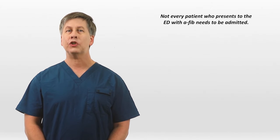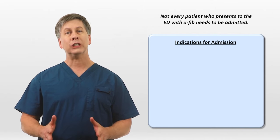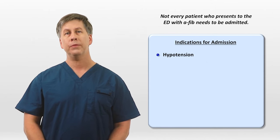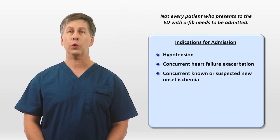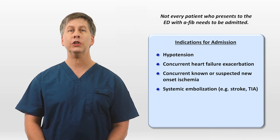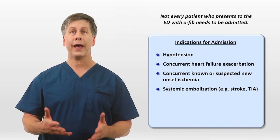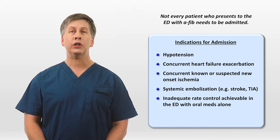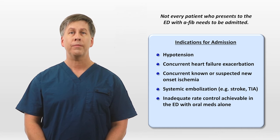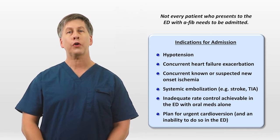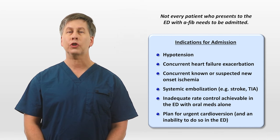Not every patient who presents to the ED with AFib needs to be admitted. Indications for admission include hypotension, a concurrent heart failure exacerbation, concurrent known or suspected new onset ischemia, systemic embolization such as a new stroke or TIA, inadequate rate control achievable in the ED with oral meds alone, and a plan for urgent cardioversion with an inability to do so in the ED.